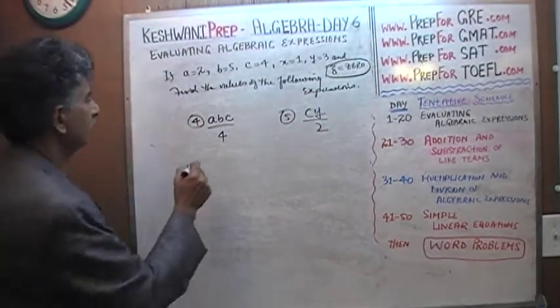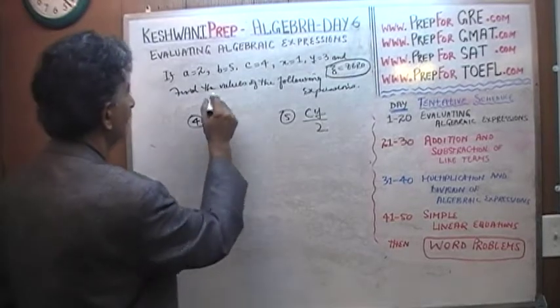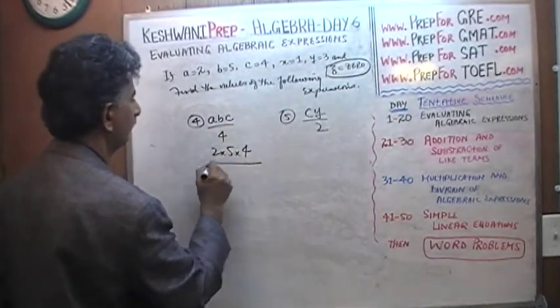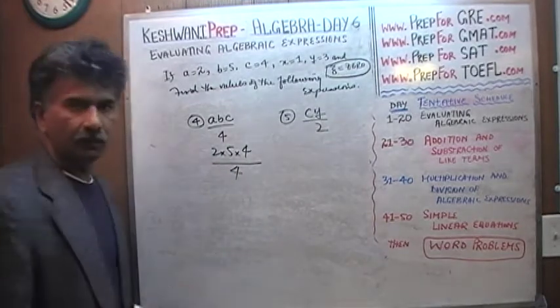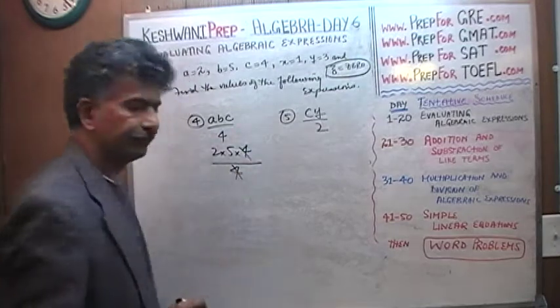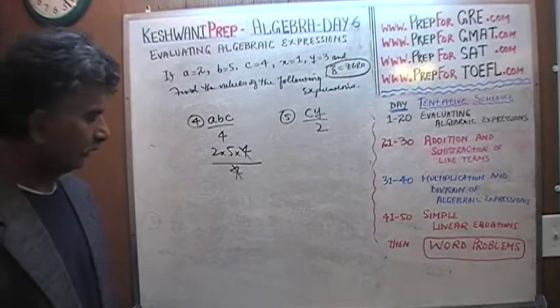A times B times C. A which is 2, times B which is 5, times C which is 4, over 4. If you were to divide top and bottom by 4, this 4 drops out.